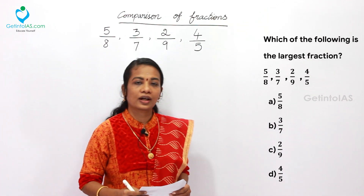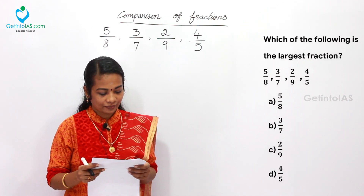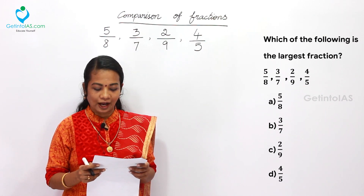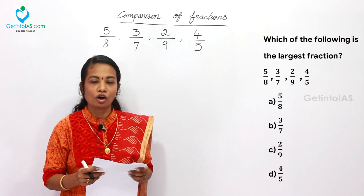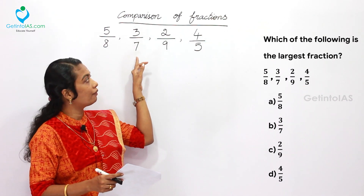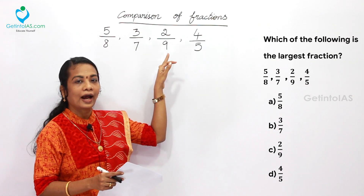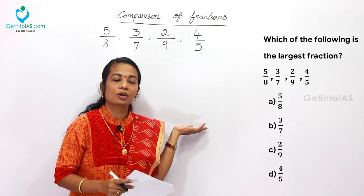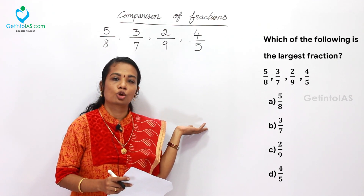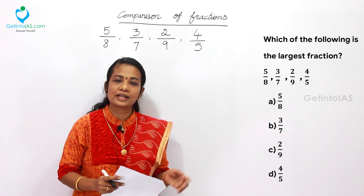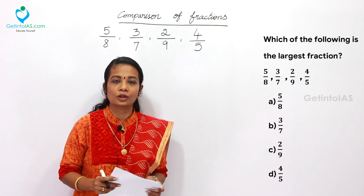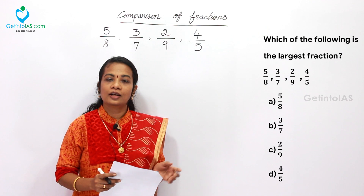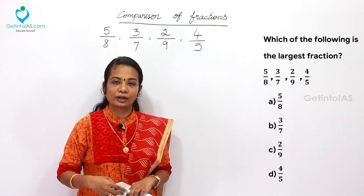The first question is: which of the following is the largest fraction among 5/8, 3/7, 2/9, and 4/5? These kinds of sums can be solved in two ways. One is the basic division method, and another one is the cross multiplication method. Let's do them one by one.